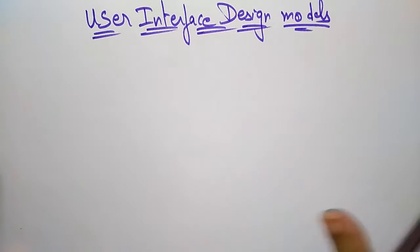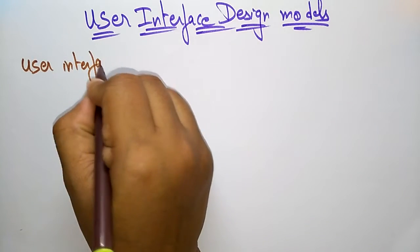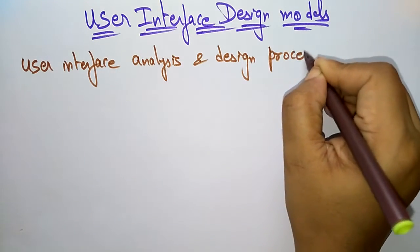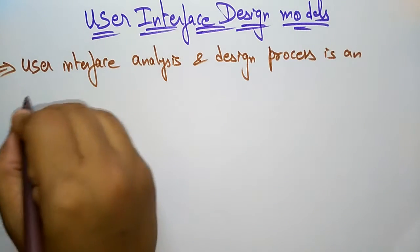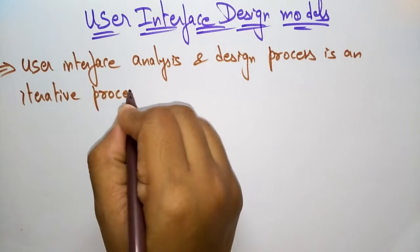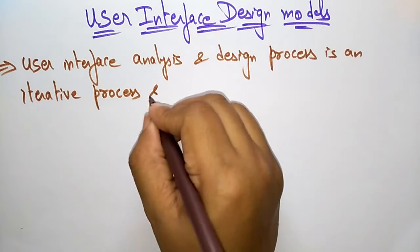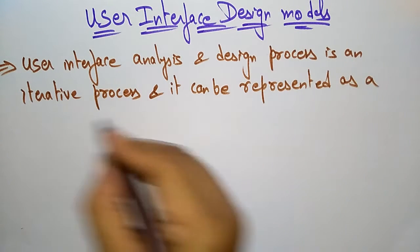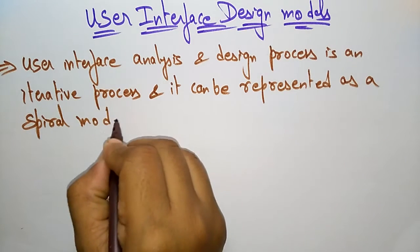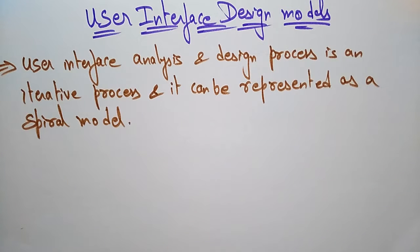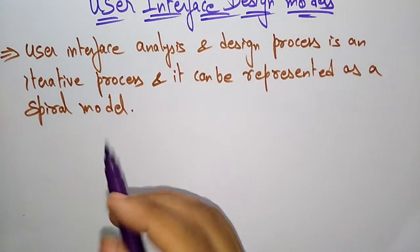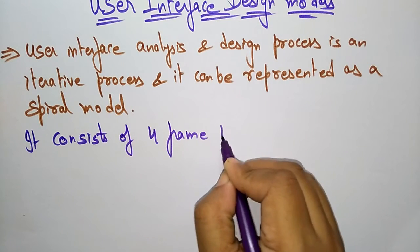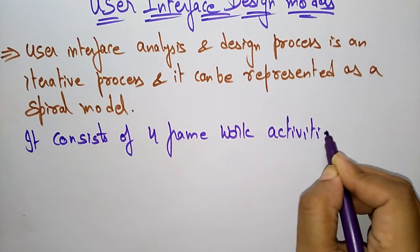The user interface analysis and design process is first an iterative process. The user interface analysis and design follows an iterative process, and it can be represented as a spiral model. This iterative process is represented using the spiral model. The user interface analysis and design consists of four framework activities.